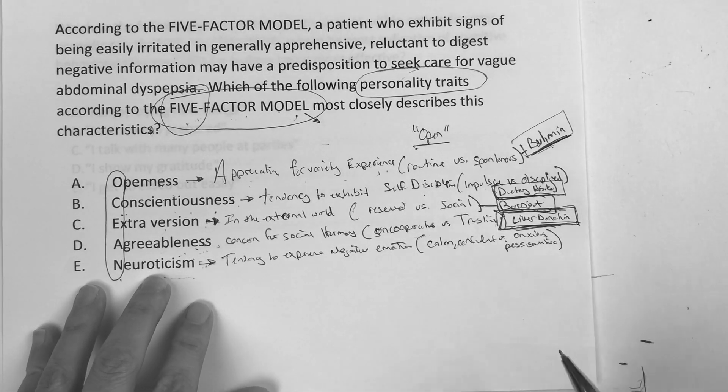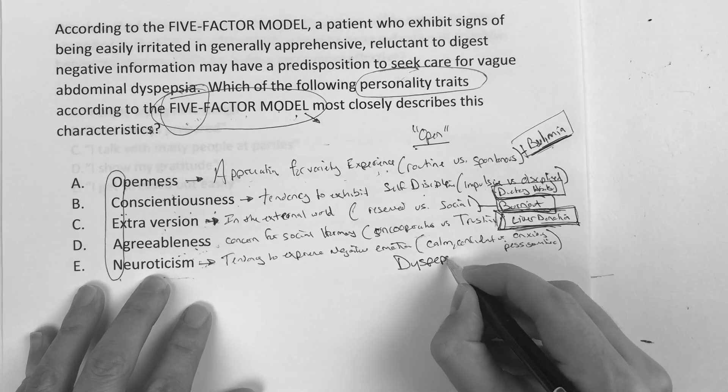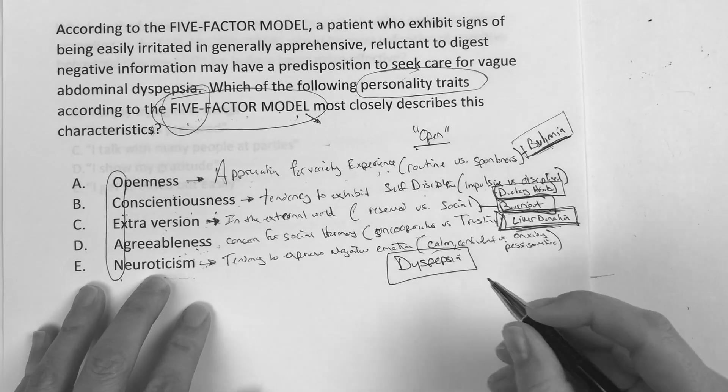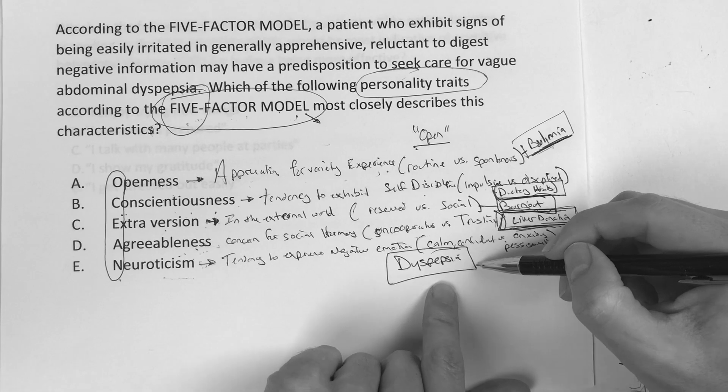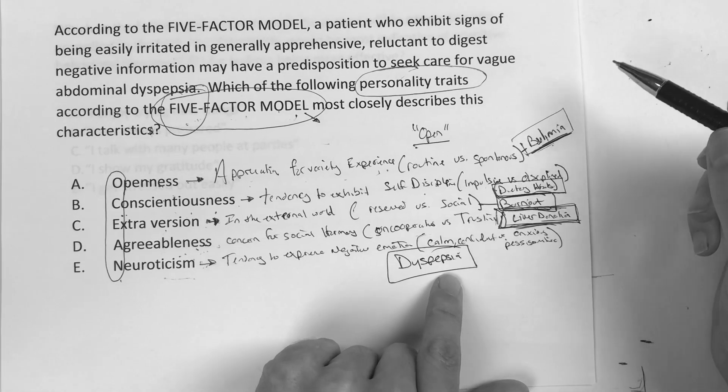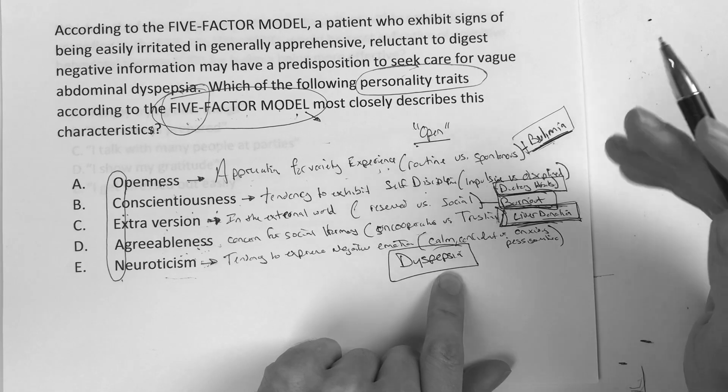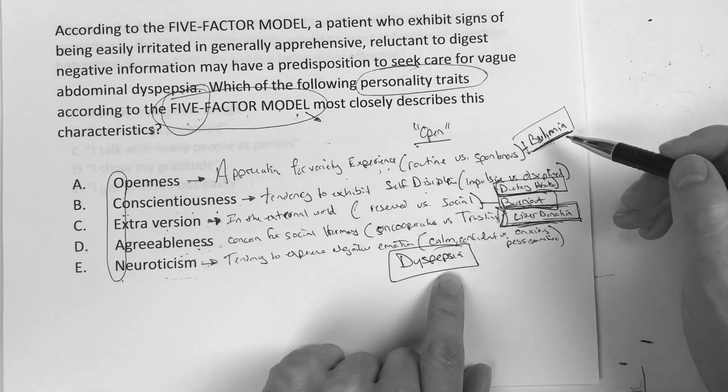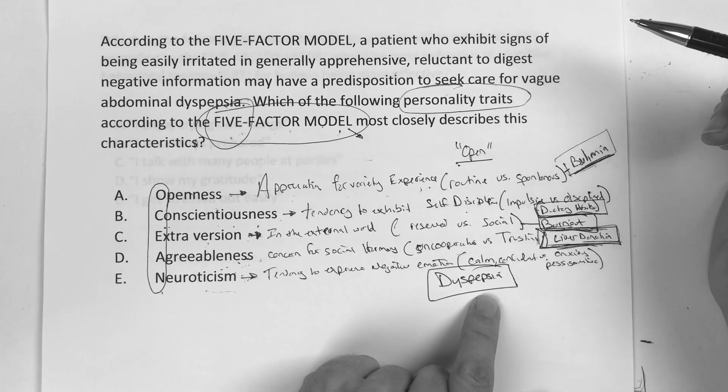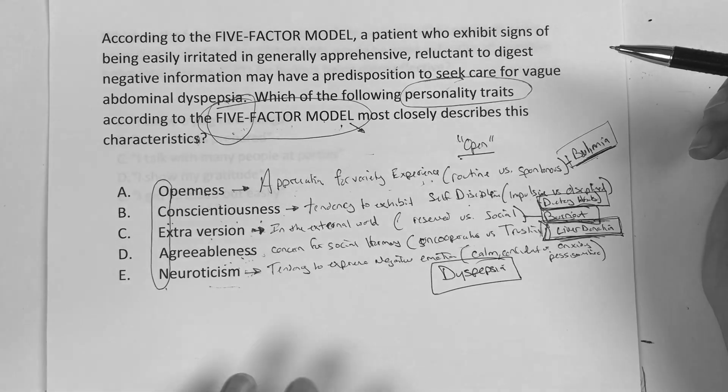And then of course neuroticism, they attach that one in the study to dyspepsia. Now again, you say, well look, that's very very specific. Yes it is. But I'm telling you, if I'm writing questions for the USMLE or the STEP or NBME or any of these guys, I'm just going to go straight from the paper what the research says.